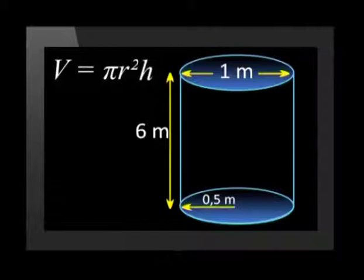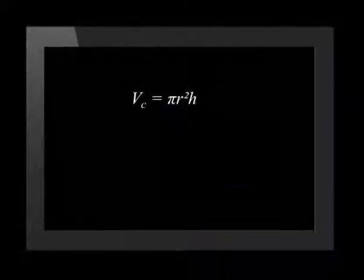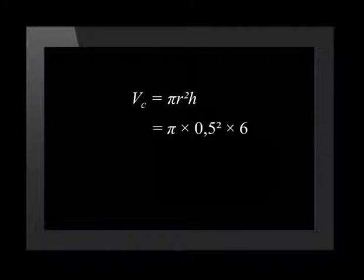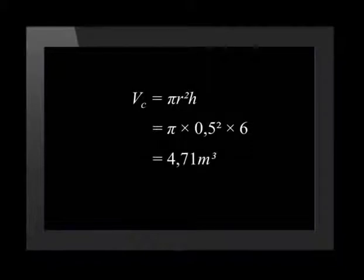The base of the cylinder is a circle, so the volume of the cylinder will be equal to pi r squared times the height of the cylinder. Substituting in the given values, we get the volume equal to pi times 0.5 squared times 6. This equals 4.71 cubic meters. To work this out using a calculator, you need to use the pi key and round the decimal answer off to two decimal places.